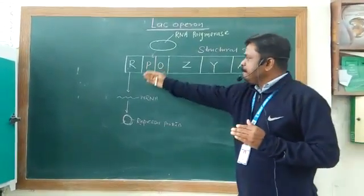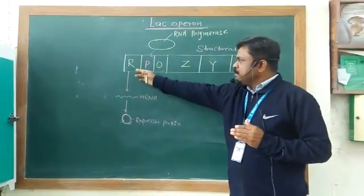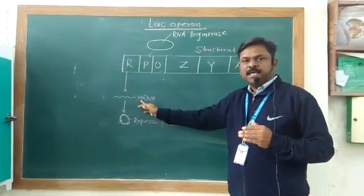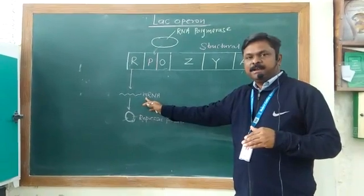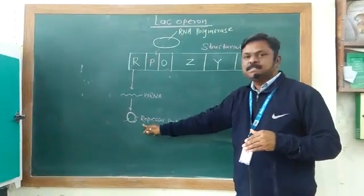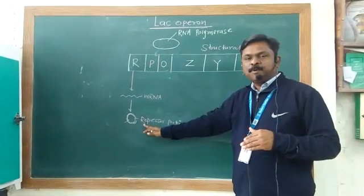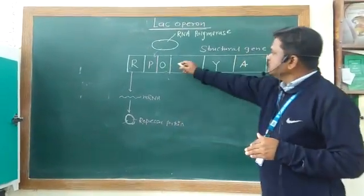Now if you keep the bacteria in a glucose medium, what happens? The regulator gene produces messenger RNA, and this messenger RNA translates and produces a repressor protein.